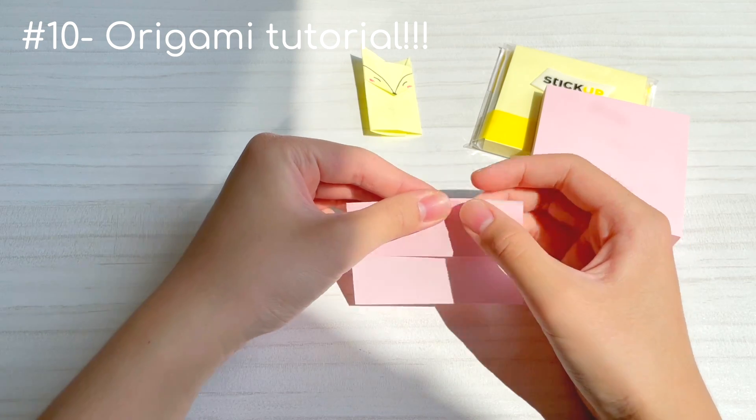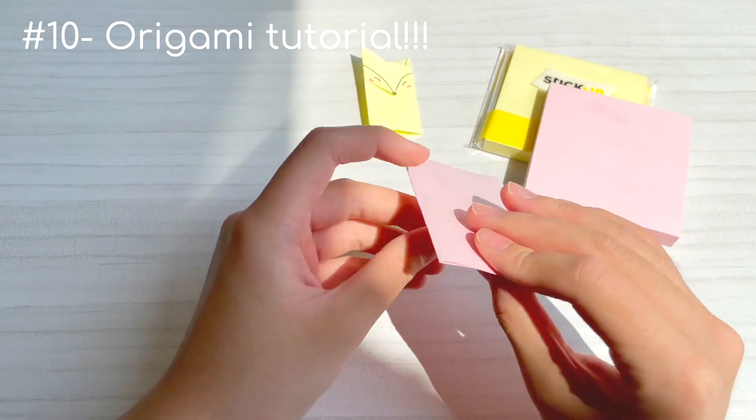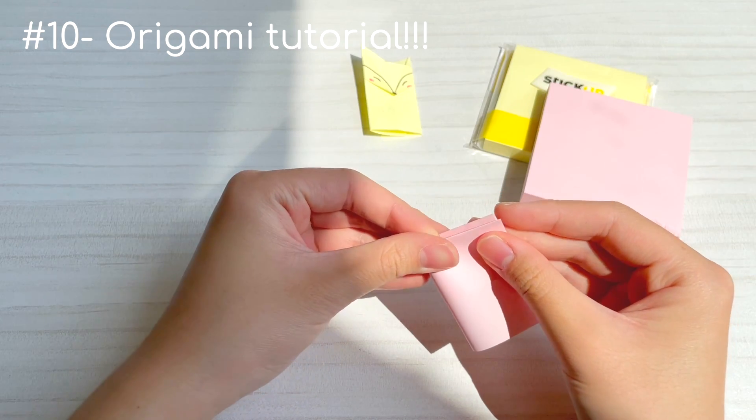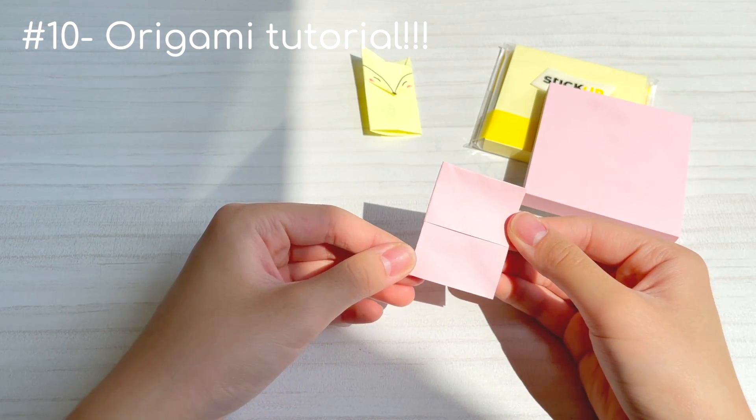Fold the sticky note down a third of the way. This will be where the note is. Fold it in half vertically.